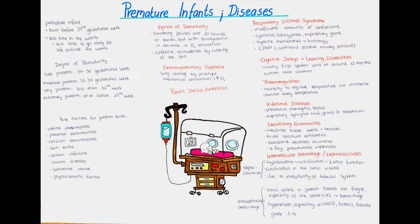Respiratory syncytial virus is a viral pathogen frequently causing respiratory infections in preterm babies. Another one is group B streptococcus bacteria, which can transmit vertically from the mother to the child. If you're interested in learning more about infections of neonates, I have made a video on TORCH infections in the pediatric playlist.